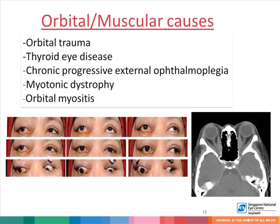Orbital and muscular causes can also cause double vision, for example with orbital trauma and entrapment of muscles, thyroid eye disease, chronic progressive external ophthalmoplegia, myotonic dystrophy, and orbital myositis — all conditions which, through inflammation, trauma, or compression, result in abnormal movement of the eyes, globe displacement, and diplopia.